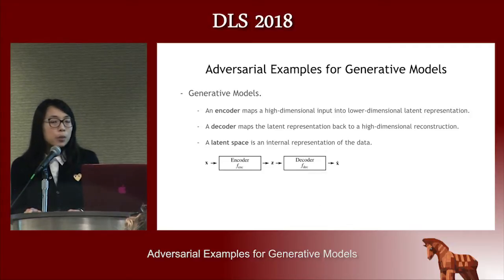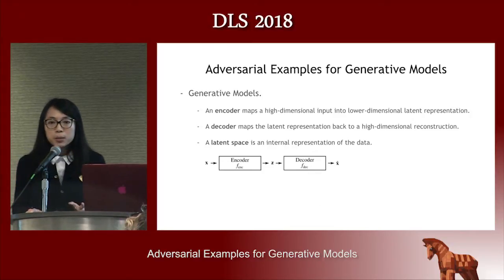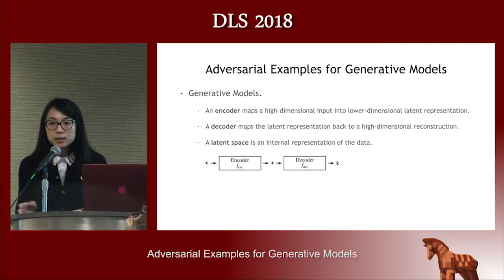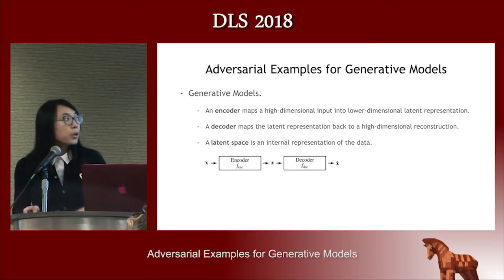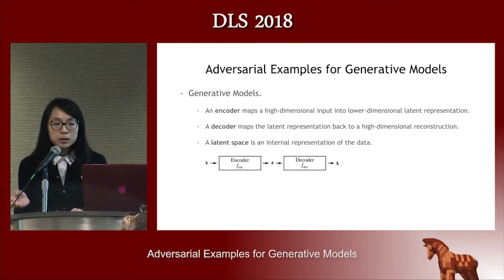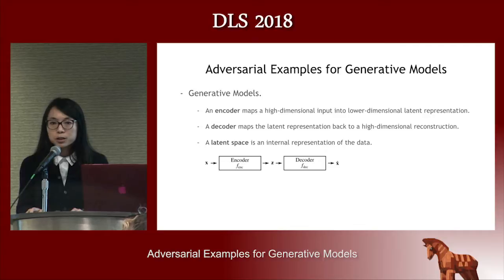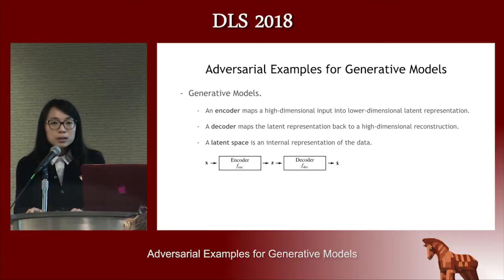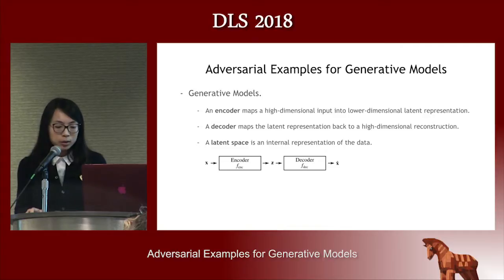In a normal generative model, there are multiple components. The first is an encoder which maps high dimensional inputs into a low dimensional latent representation space. Then there is a decoder which maps the low dimensional latent space back to the original high dimensional reconstruction of the image or any data domain. The latent space is an internal representation of the data, as shown in the figure with the encoder and decoder.